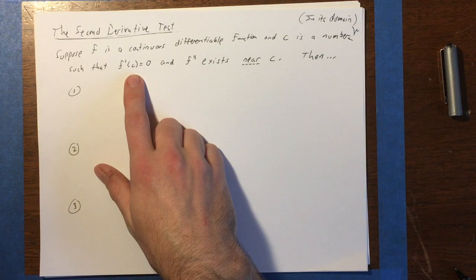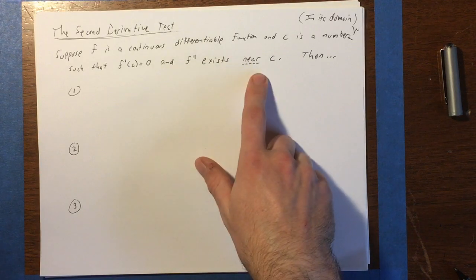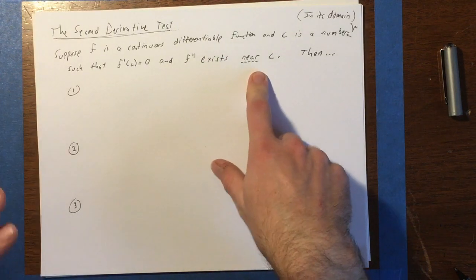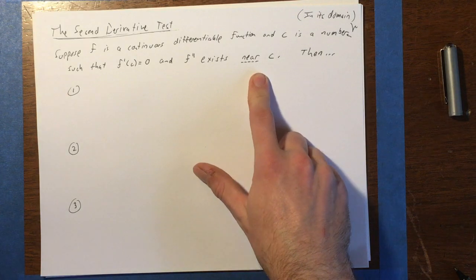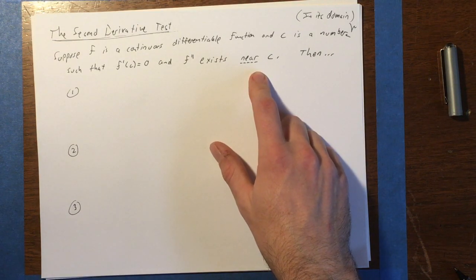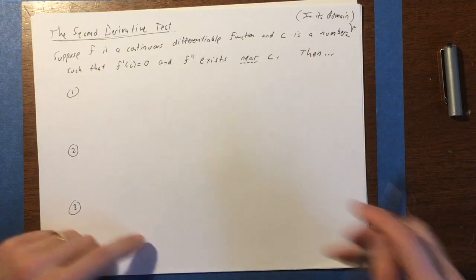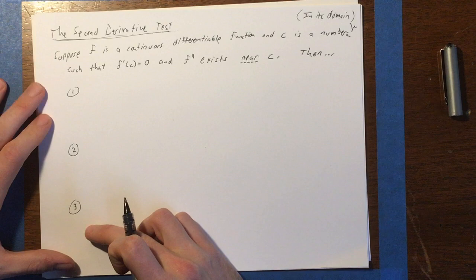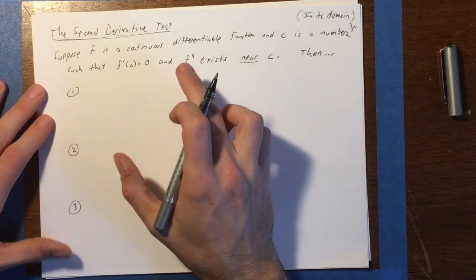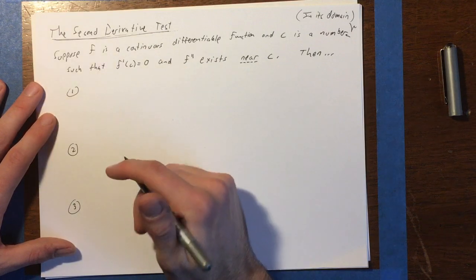So the way you do it is you take f double prime, you need to make sure that that exists near c, not necessarily at c, it might be undefined at c, but you don't really mind. Then there's three cases, three things that can happen. We're going to look at the value of the second derivative of f at c, and that's going to give us some information.